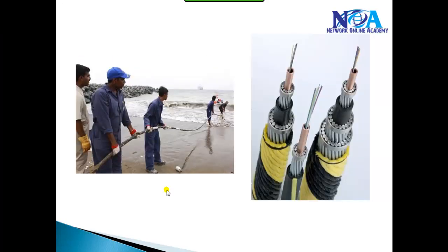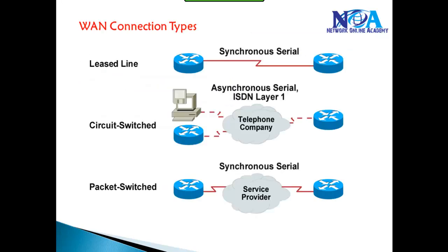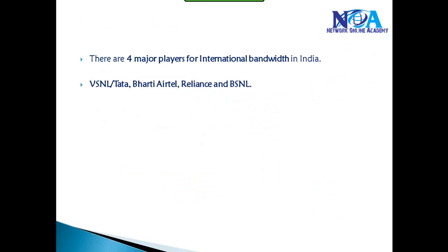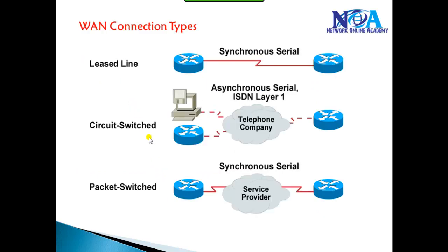This infrastructure is built by service providers to provide connectivity between their own exchange offices across different cities and countries. In India, for example, there are around four major service providers, and depending on the country, the service providers can vary.